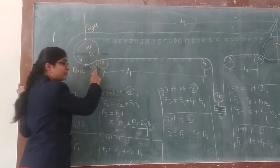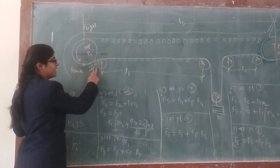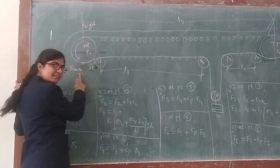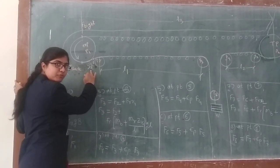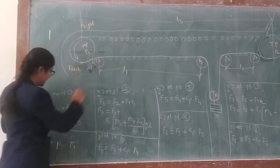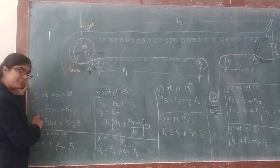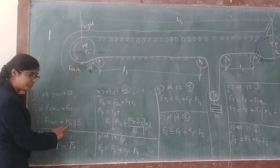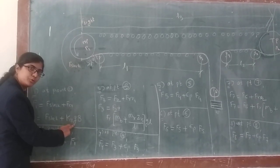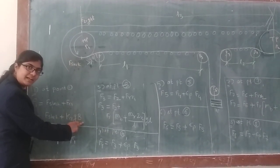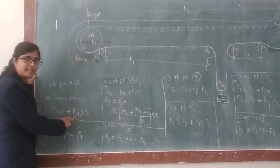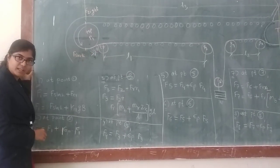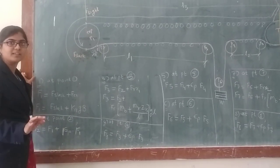We will take point one after the belt cleaner device. The tension at point one, F1, is equal to F-slack plus the frictional resistance offered due to the belt cleaner device. So at point one, F1 will be equal to F-slack plus Fcl, where Fcl is the frictional resistance given by the cleaning meter. It will be Kcl into G into P, where G is the width of the belt in meters and Kcl is a constant. The frictional resistance at point one is in terms of F-slack, because at this point you don't know the value of F-slack.